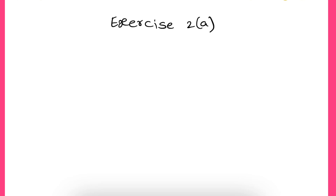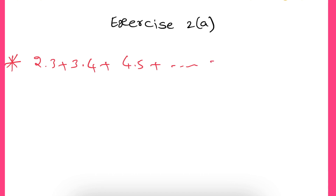Hello everyone. In this video we are going to discuss Exercise 2 of mathematical induction. If you didn't watch the previous videos, the link is in the description. In this exercise, we already discussed the first question in the previous video. In this video I'm going to discuss from the second question. The question is: show that 2×3 + 3×4 + 4×5 + ... equals n(n² + 6n + 11)/3 by using mathematical induction.